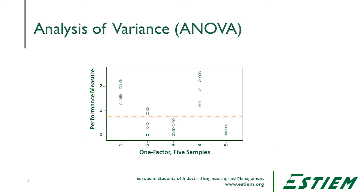Looking at this graphic, we see there are five different subgroups. There's one sample, one factor, so there's one Y we measure — that's what a one-way ANOVA means. It's one Y factor, and here we have five independent samples.